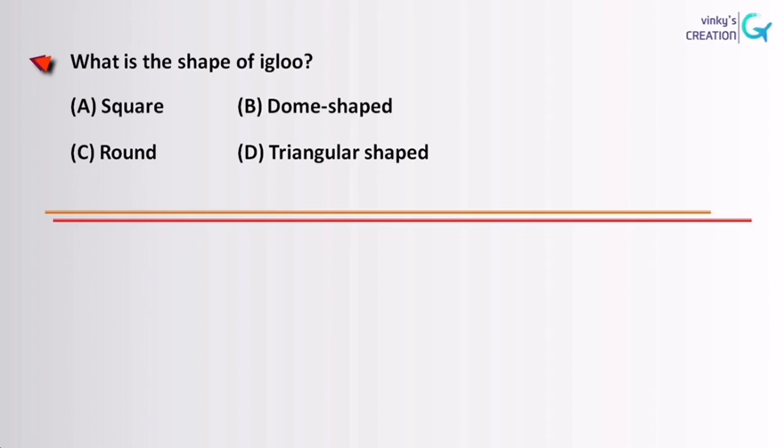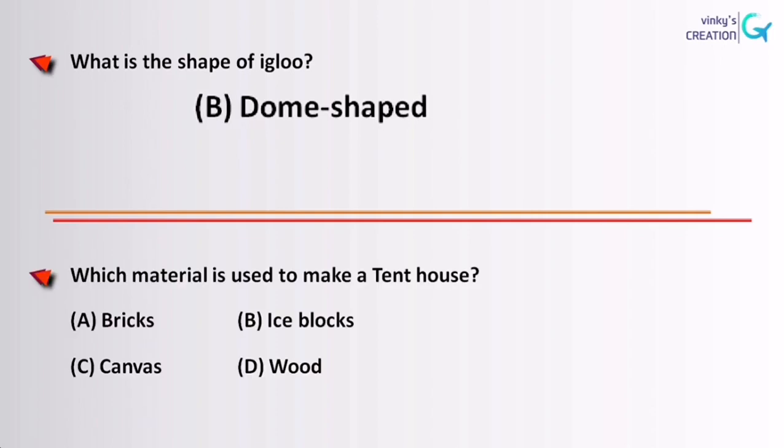What is the shape of an igloo? Dome shape. Which material is used to make a tent house? Canvas.